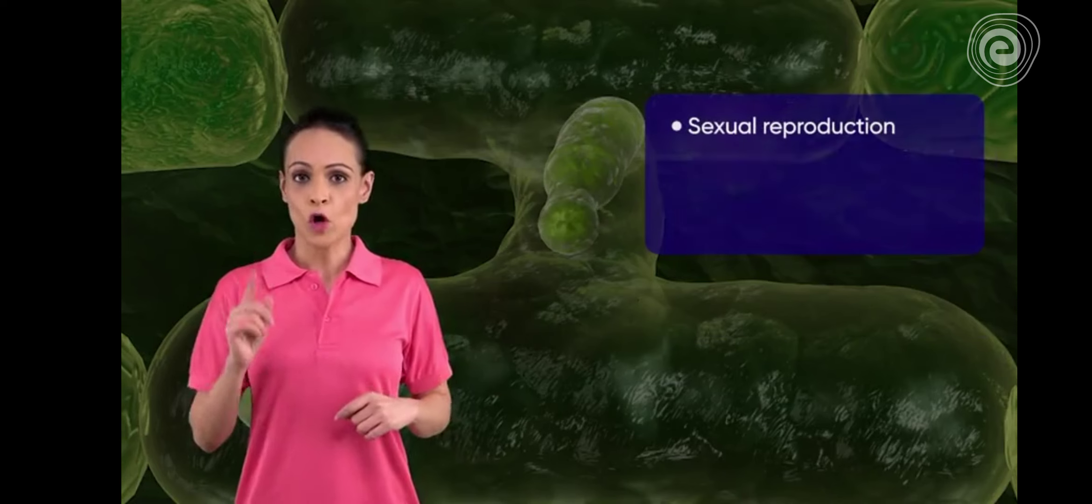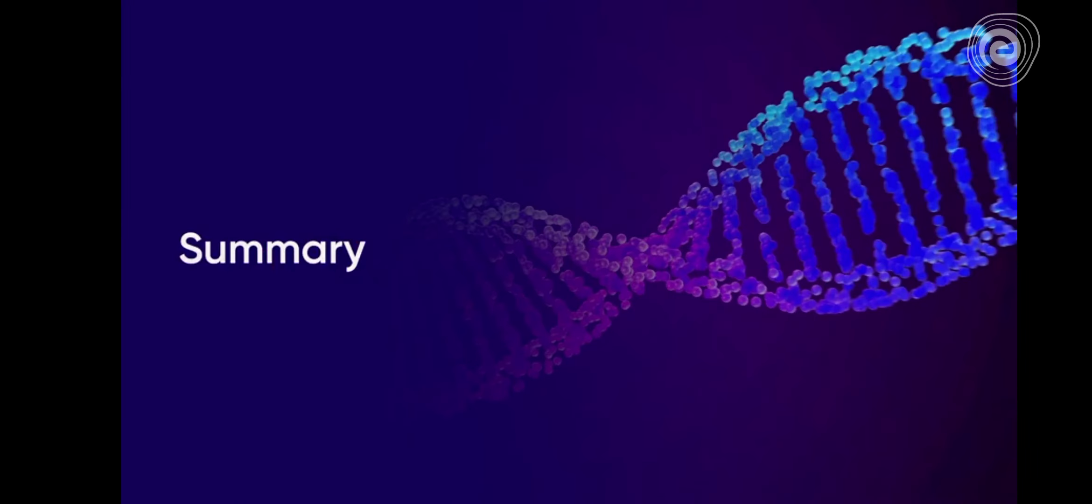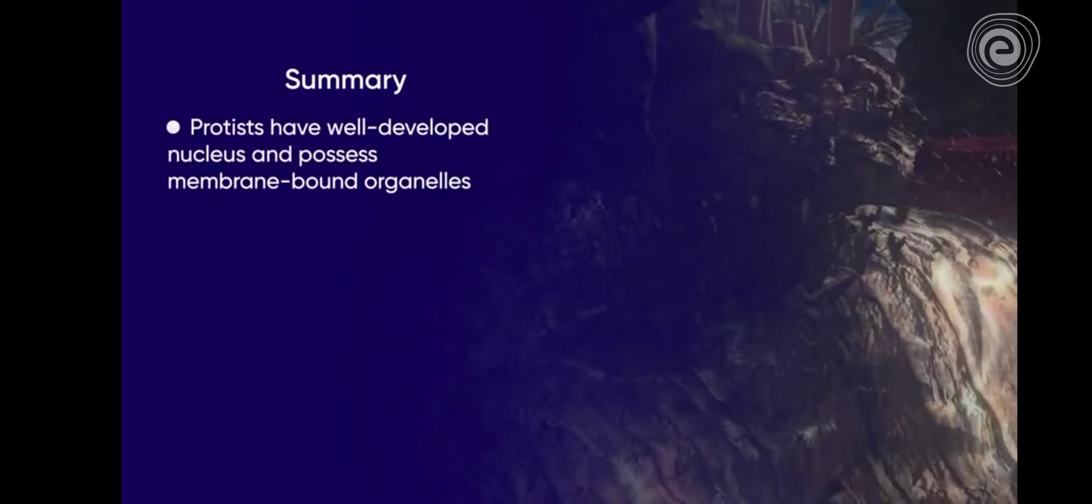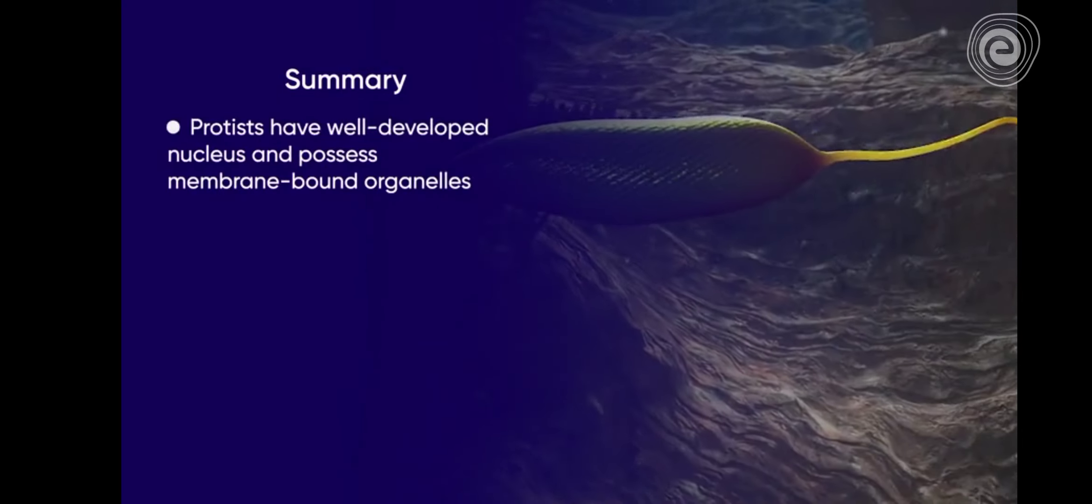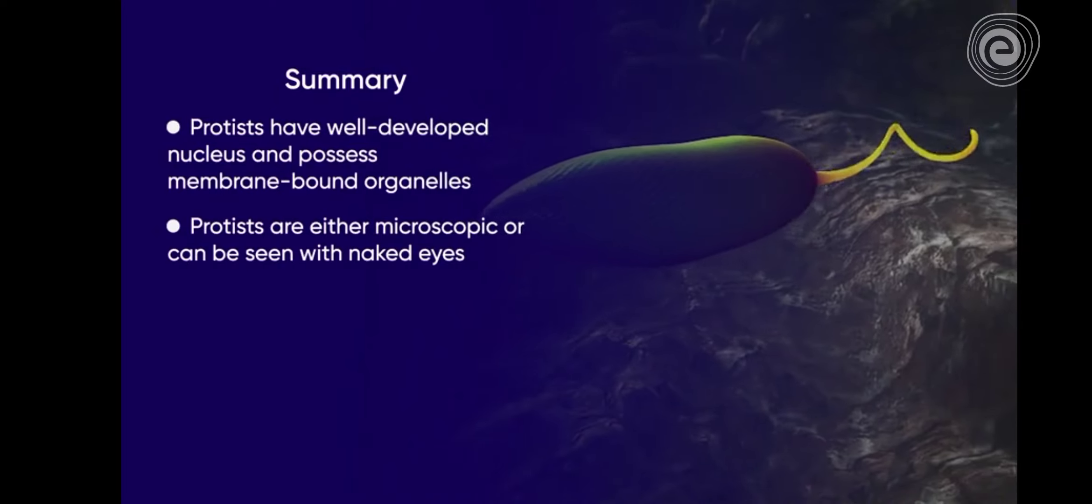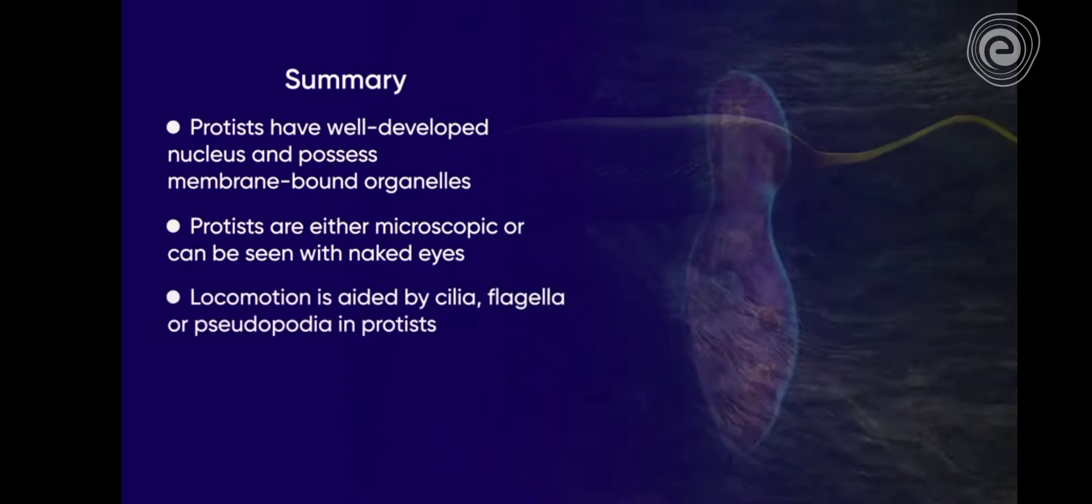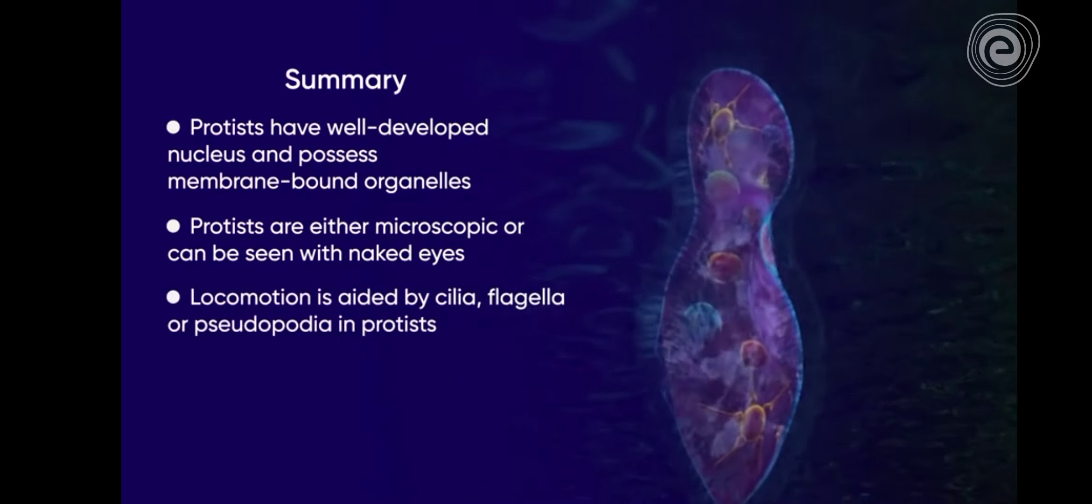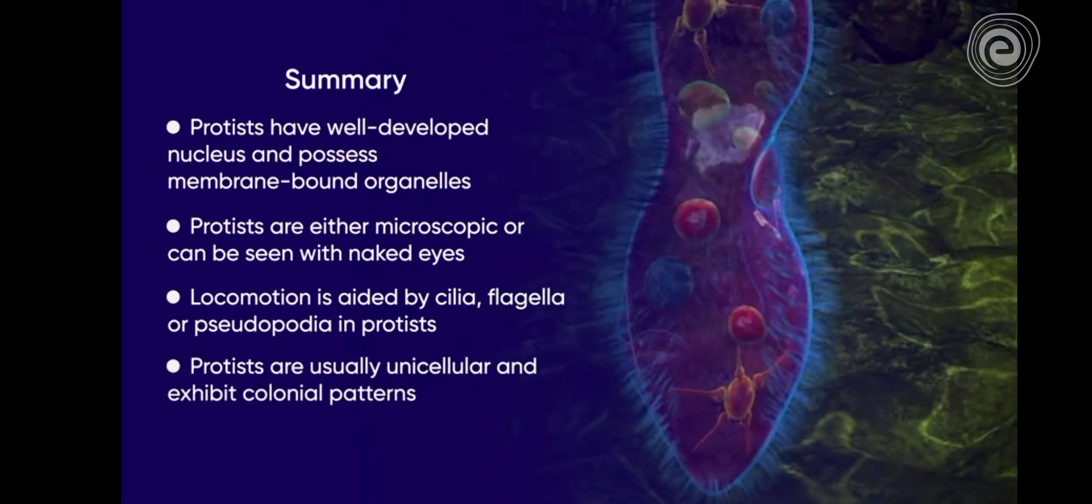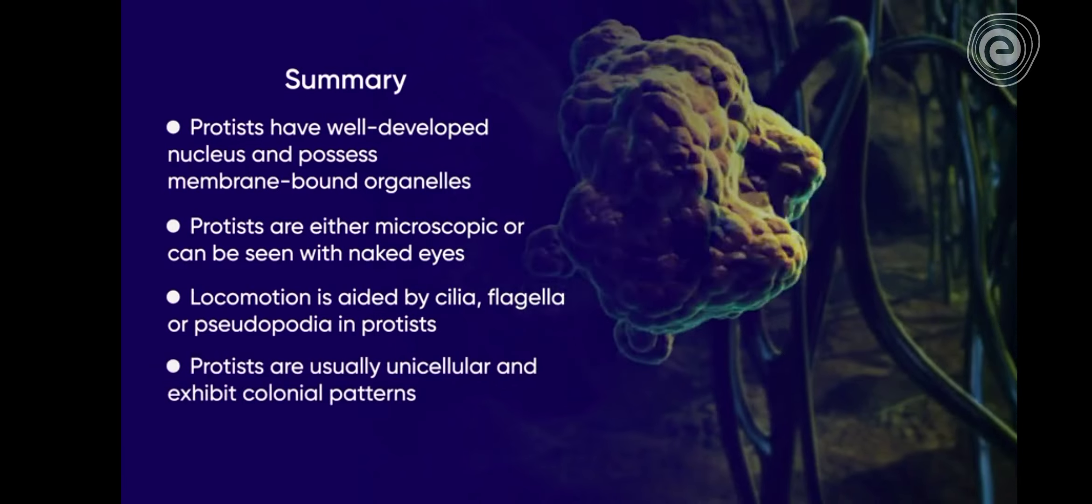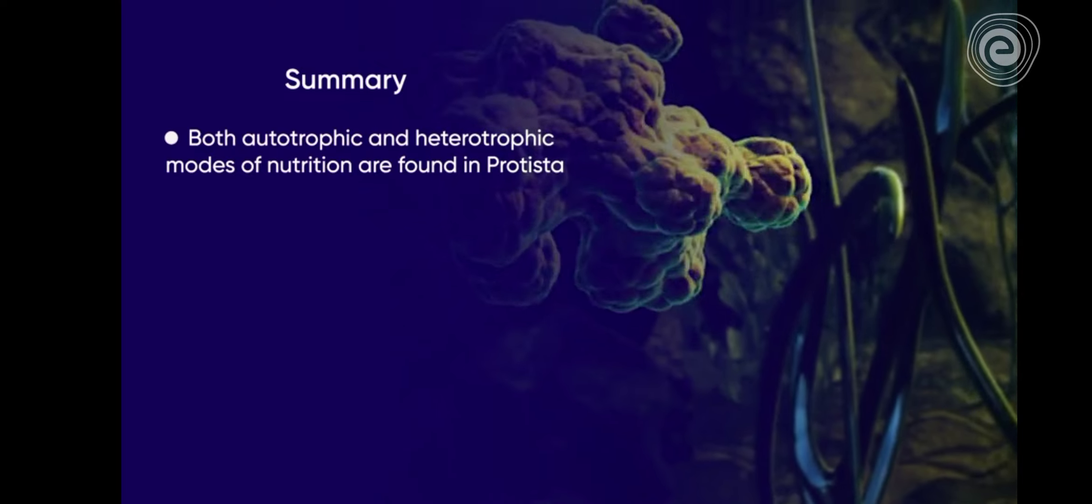Let's summarize general characters of Protista: Protista have well-developed nuclei and organelles that are membrane-bound. They are either microscopic or can be seen with the naked eye. They bear cilia, flagella, or pseudopodia for locomotion. They are usually unicellular and exhibit colonial patterns. Protista exhibit autotrophic and heterotrophic modes of nutrition.